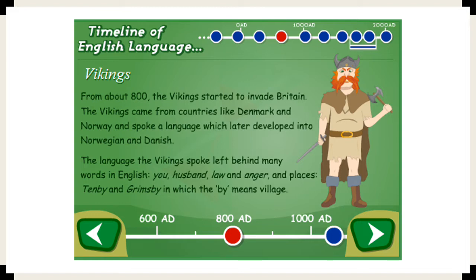The following question asks you to think about — in the same way that we drew conclusions about the Anglo-Saxons based on words like 'house', 'cow', 'bread' and 'sword' — what conclusions can we draw about the Vikings based on the words they left us with: 'you', 'husband', 'law' and 'anger'? What do those additions to our language tell us about the Vikings?